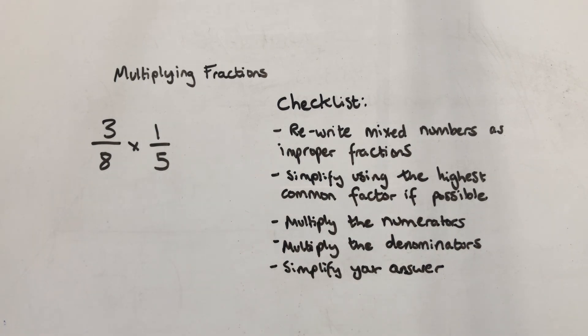In this first example I have no mixed numbers, I don't have any whole numbers as well as fractions. The next thing says to simplify your fractions using the highest common factor if possible. I can't simplify this fraction anymore on either side so I'm going to keep on going.